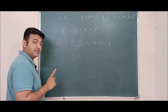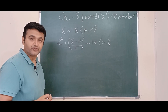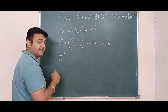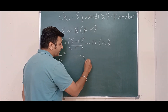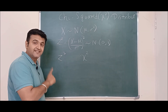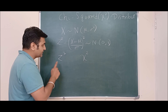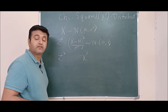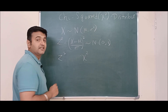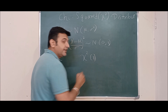Now the question is: if we square Z, what is the distribution of Z-squared? Well, Z-squared is said to follow chi-square distribution. Since Z is a random variable, Z-squared is also a random variable. We say that Z-squared follows chi-square distribution with 1 degree of freedom.